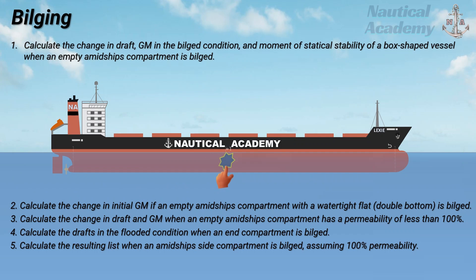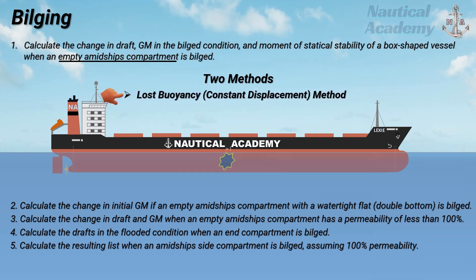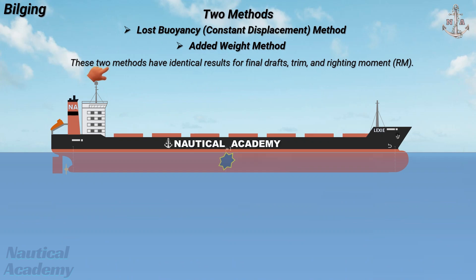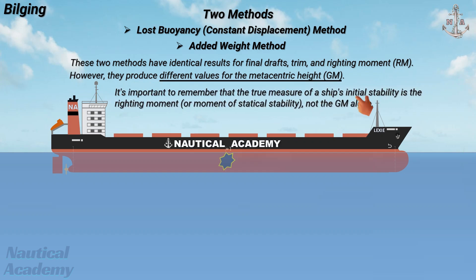This video will focus on one specific scenario: the bilging of an empty amidships compartment. Two different methods are used to calculate the change in draft, metacentric height in the bilged condition, and moment of statical stability — the lost buoyancy method, also known as the constant displacement method, and the added weight method. These two methods have identical results for final drafts, trim, and righting moment; however, they produce different values for the metacentric height.